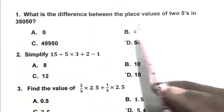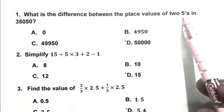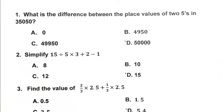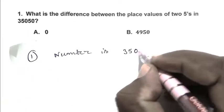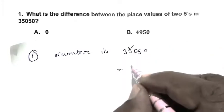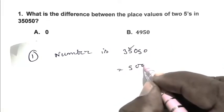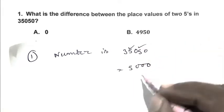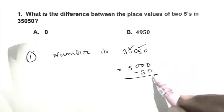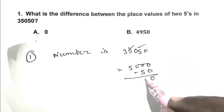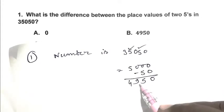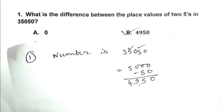Question number 1. What is the difference between the place value of 2 fives in 35,050? The place value of this five is 5,000 and the place value of this five is 50. So the difference is 4,950. So B is the right answer.